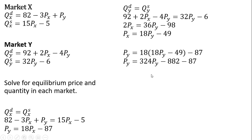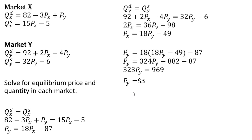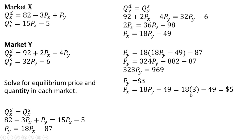Simplifying that: 18 times 18 is 324, times the price of good Y, and so on. Collecting our price of good Y terms and dividing by 323, the price of good Y equals $3. What is the price of good X? You can take this price of good Y and plug it into the equation up here, and we'll see that the price of good X is 18 times 3, or 54, minus 49, which equals $5.